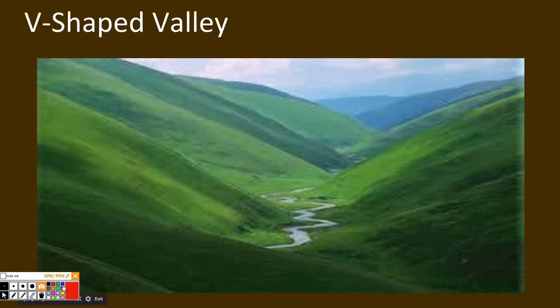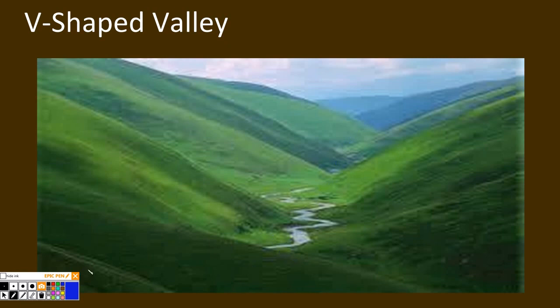A V-shaped valley forms when a U-shaped valley, formed by glacial weathering, has a river running through it. The river weathers and erodes the rock even further, sharpening the U to a V.